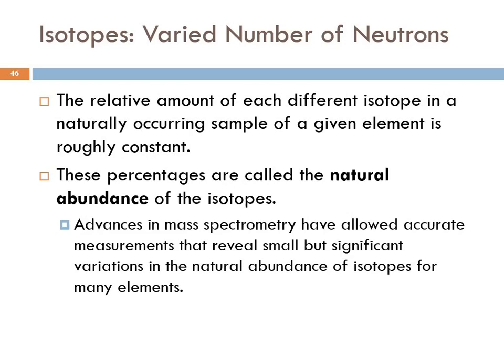If we look at a sample of neon that we isolate out of the air here or on the other side of the world, what we'll find is that the relative amounts of each isotope are roughly constant, regardless of where you get that element from. These are called natural abundance of isotopes, and they're usually expressed as a percentage. Because of advances in technology, we now know that there are small but significant variations for many of these elements. But for the purposes of this class, we can kind of gloss over that.